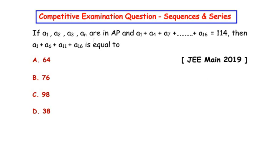If a1, a2, a3, an are in arithmetic progression and a1 plus a4 plus a7 plus till the term a16 is equal to 114,